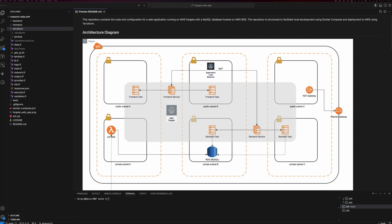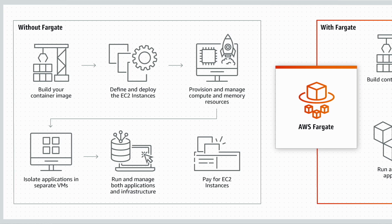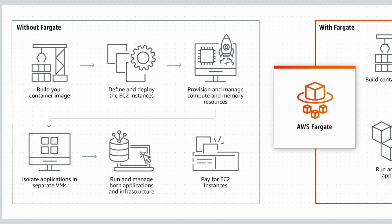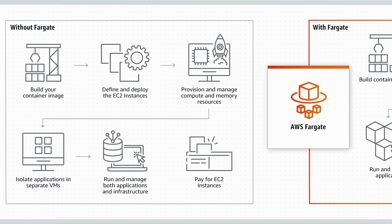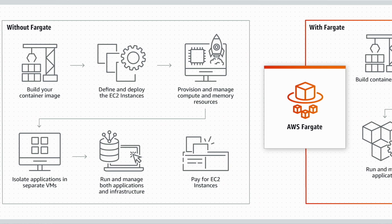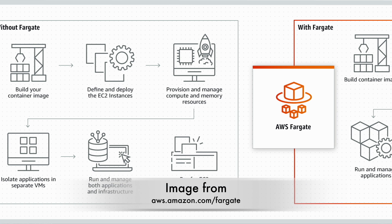Before we begin, why are we using AWS Fargate here? Since I don't have a large set of microservices that would require a Kubernetes cluster, but still need to manage containerized workloads efficiently. First, Fargate eliminates the need for me to manage servers. With Fargate, there's no need to provision, configure, or scale clusters of virtual machines to run my containers. This means I can focus solely on building and deploying my application without the headache of managing the underlying infrastructure.